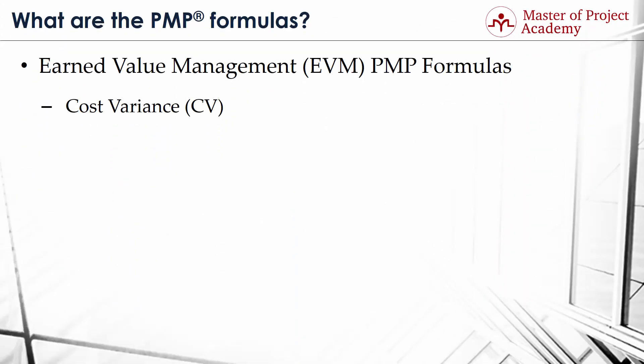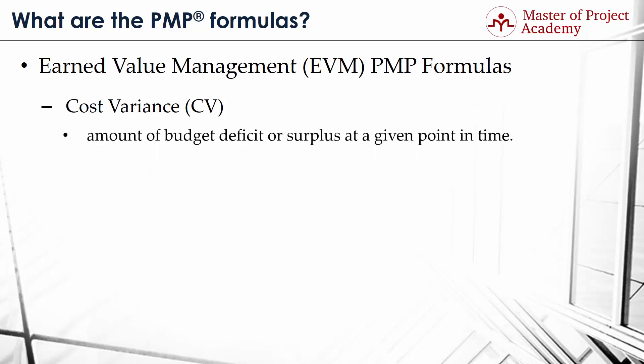PMP formula number 3: Cost Variance or CV. Cost Variance represents the amount of budget deficit or surplus at a given point in time. Basically, we express it as the difference between earned value and the actual cost. Accordingly, its formula is: CV equals EV minus AC.